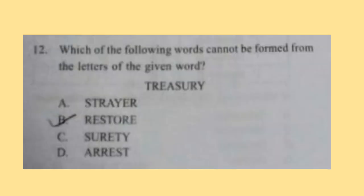Question 12: Which of the following words cannot be formed from the letters of the given word? The word is TREASURY — T, R, E, A, S, U, R, Y. Correct answer is option B, RESTORE. The letter O is not present in TREASURY, so it cannot be formed. So B is the correct answer.